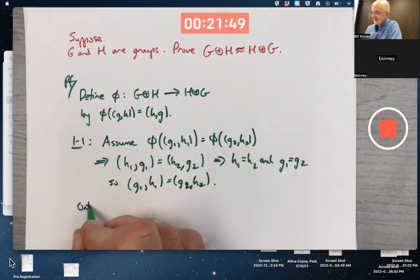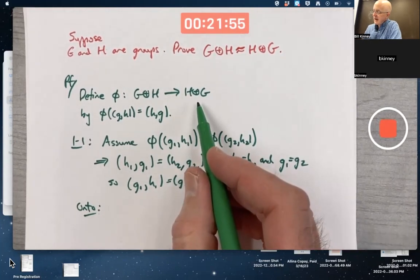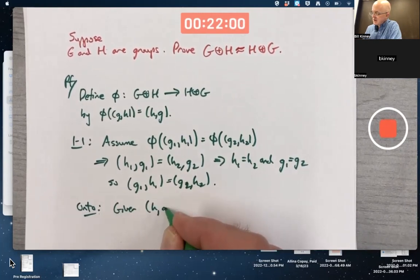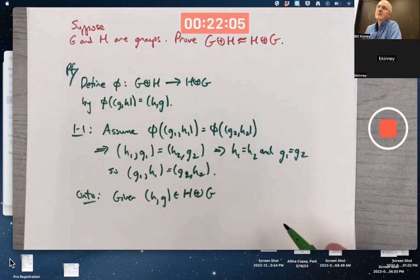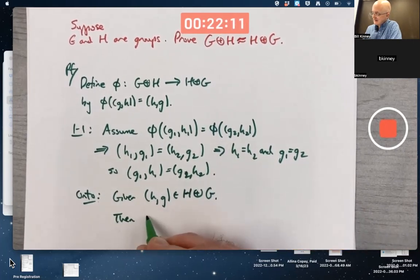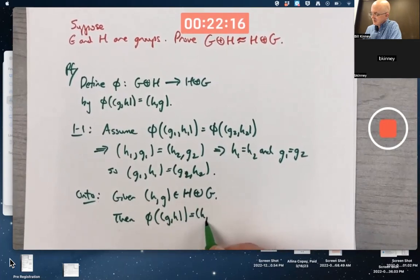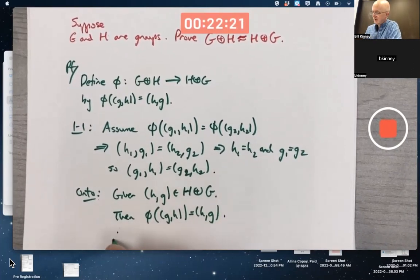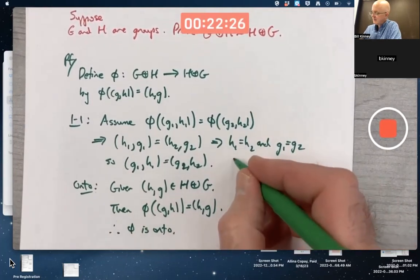On to: give me an arbitrary element of the codomain. Given H comma G in the codomain of this function, what gets mapped to it? I hope that's pretty clear. It's G comma H. It's almost too easy. Therefore, phi is onto. I should have said, therefore, phi is one-to-one here.